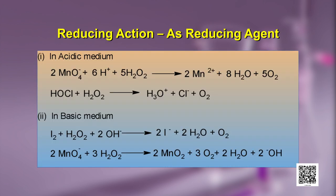The reducing action of hydrogen peroxide — it can act as a reducing agent both in acidic and basic medium. In acidic medium, as shown in the equation, it reduces MnO₄⁻ anion to Mn²⁺ ion, meaning there is a change in the oxidation state of Mn from +7 to +2.